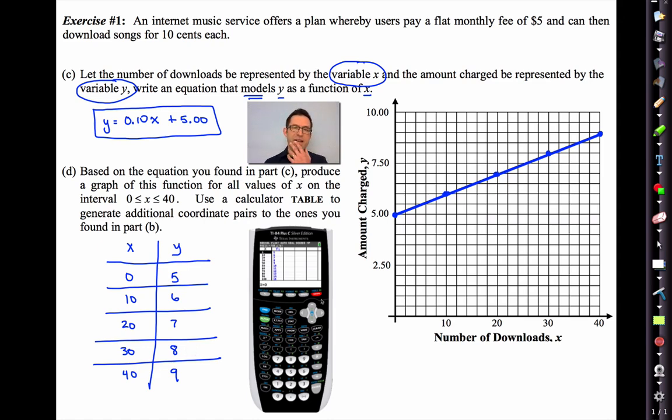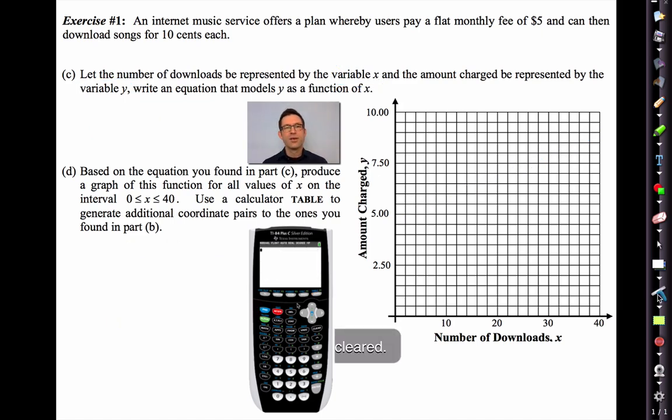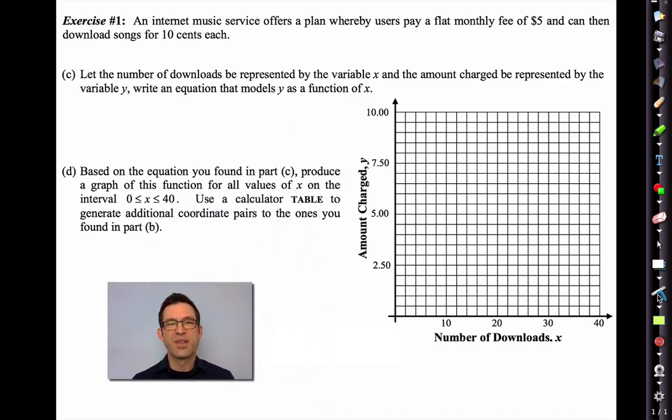Now technically, this is actually, if you remember something from algebra 1, this is the case of a discrete variable. So really, I shouldn't be connecting these with a nice solid line, because obviously the number of downloads would have to be an integer. But sometimes we'll draw a graph as continuous even when it's not, because it's too difficult to show just the dots instead of connected with a nice solid curve. I'm going to be clearing this out in a moment, getting rid of the TI calculator. So write down what you need to.